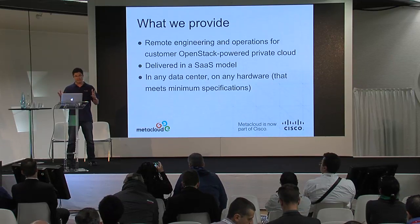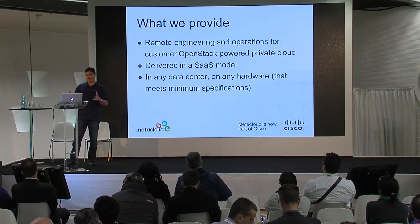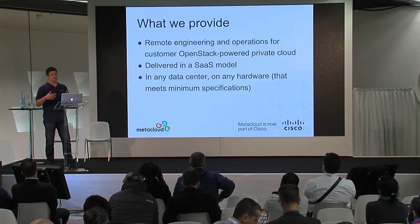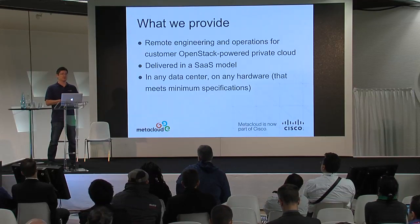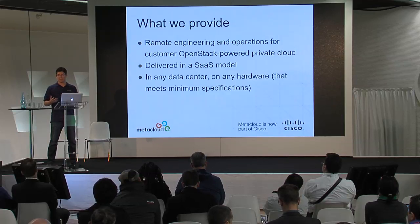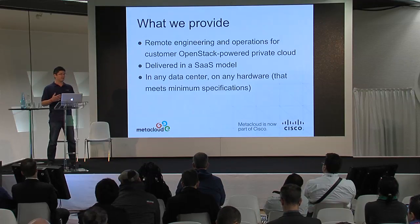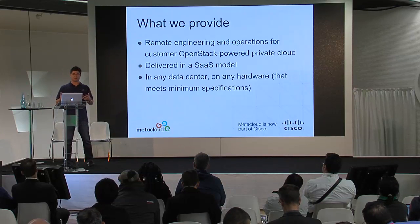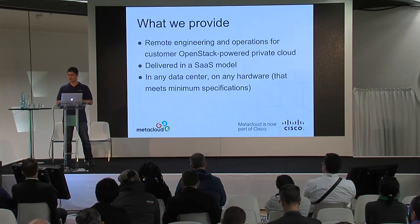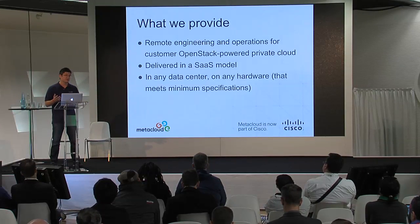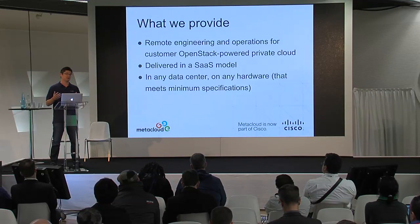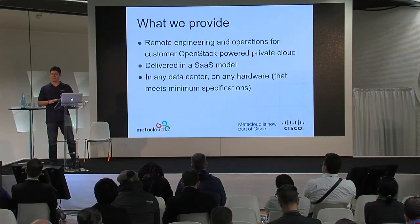We upstream as much of this as time allows. Our operations team will install our distribution within our customers' data centers, and once it's installed they'll actually monitor that infrastructure 24 by 7. They'll detect any problems, troubleshoot those issues if they can, and if they can't, alert our customers so they can take appropriate action. We deliver all of this in a SaaS-based model, so customers subscribe to our service and automatically get updates to their infrastructure — new features, patches to the underlying platform and so on.